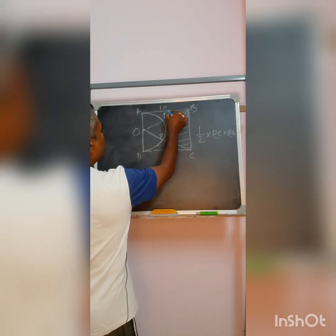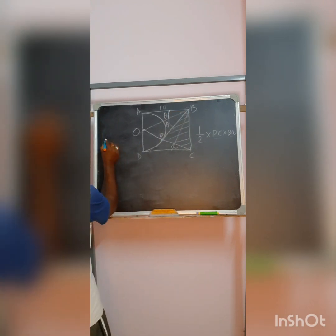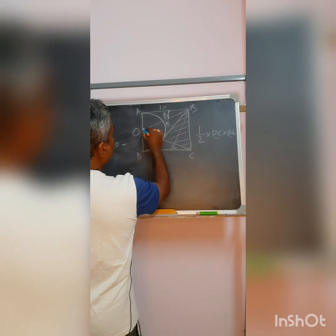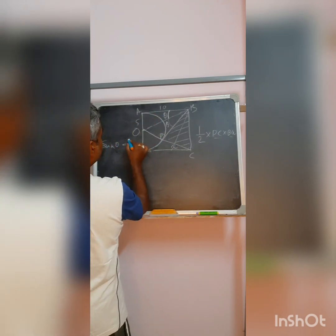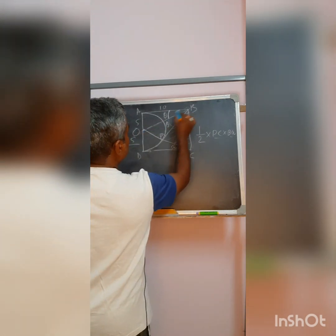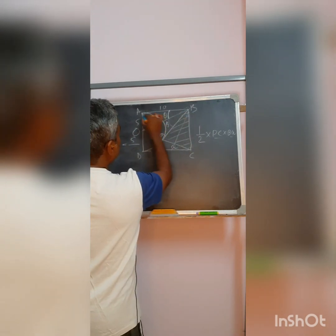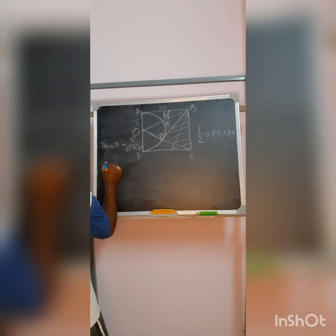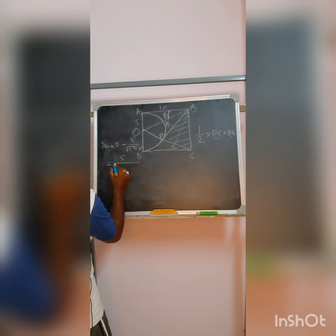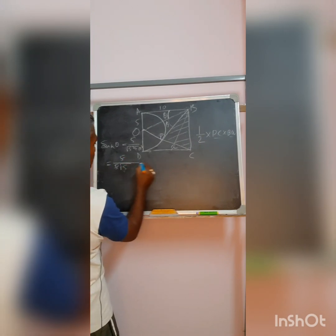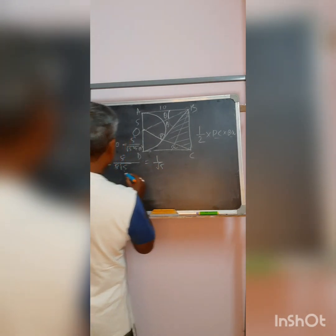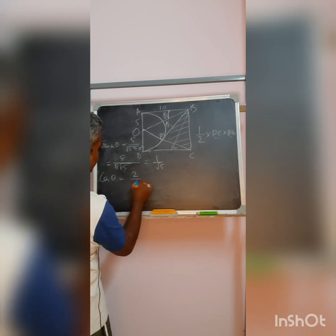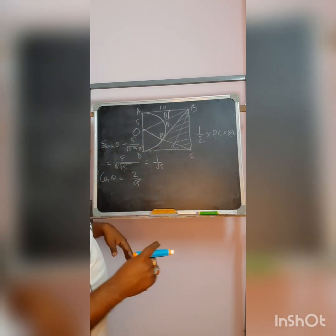Now let us take sin theta. Sin means the vertical, which is half of the diameter — that is 5 — and the hypotenuse, which is nothing but the square root of 5 squared plus 10 squared. So this gives 5 upon root of 125, and 5 cancels out giving 1 by root 5. So sin theta equals 1 by root 5 and cos theta equals 2 by root 5. This will be useful for further calculations.